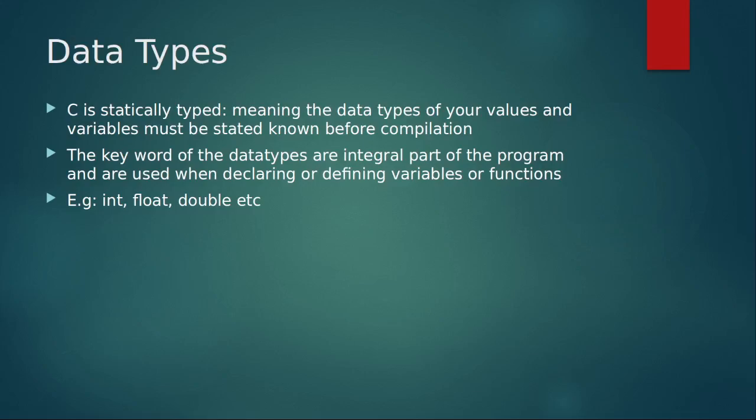All right. Data types. C is statically typed. Meaning that the data types of your value and your variables must be stated. That means they must be known before compilation. So you must know the data types, you must type the data types before you compile. So it's not going to be a thing of you don't know whether it's going to be a string, you don't know whether it's going to be an integer. You must know beforehand before you compile the code. So whenever you, the keywords of data types are integral parts of the program and are used when declaring or defining variables or functions. So for example, int, float, double and so on.